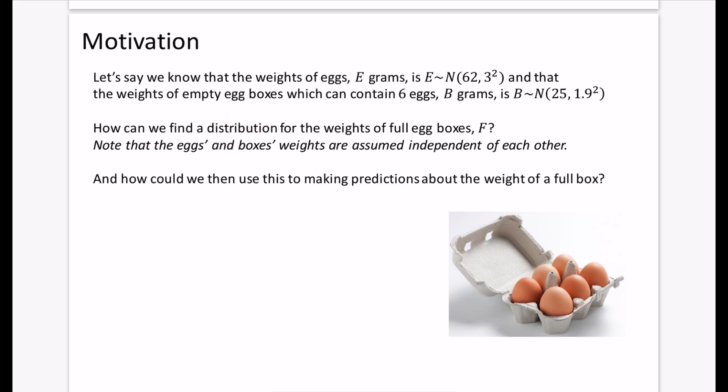And so the question is going to be things like this. How can we find a distribution for the weights of full egg boxes? Now, the reason that this is, I think, quite interesting is because we're going to put six eggs inside one of these boxes and each one of these eggs is going to have its own distribution. It's going to have its own variation according to this setup that we have of the normal distribution. And we're combining six of those with a box that is also going to be varying according to the normal distribution as well. And we're going to try and drill down on this during this chapter.